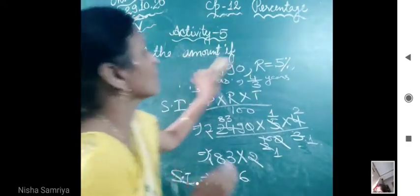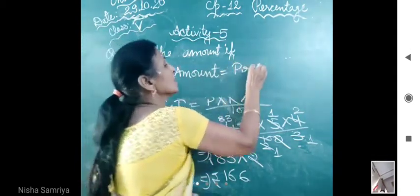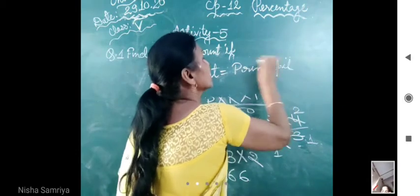Yeh kya aaya hamare paas? Simple interest. Now what do we do? Amount calculate. So, kids, amount is equal to principal plus interest.